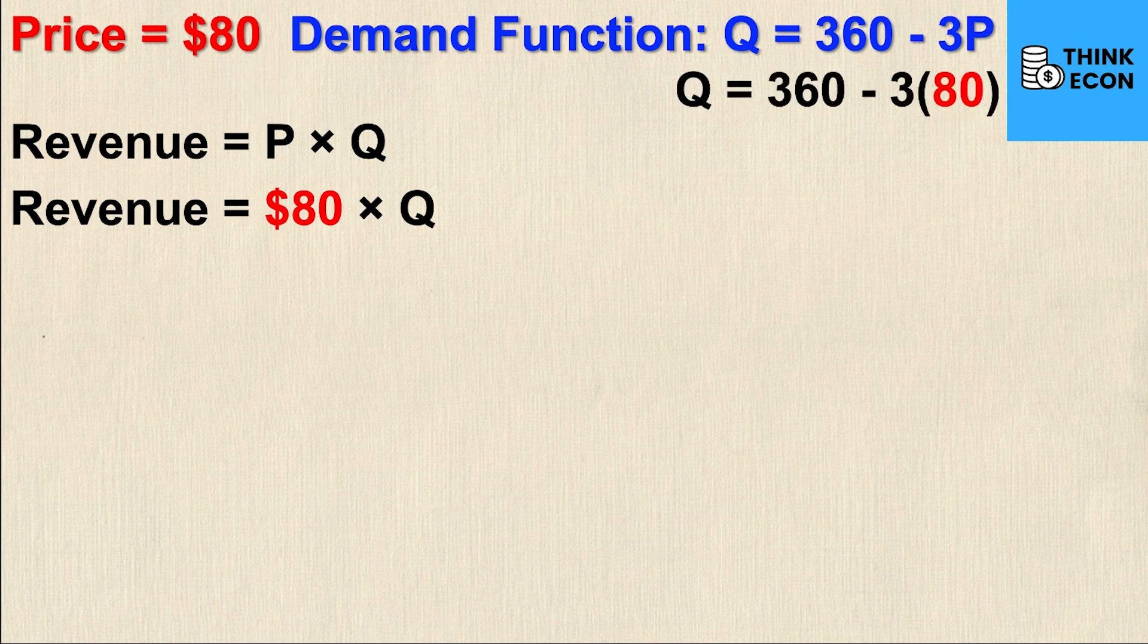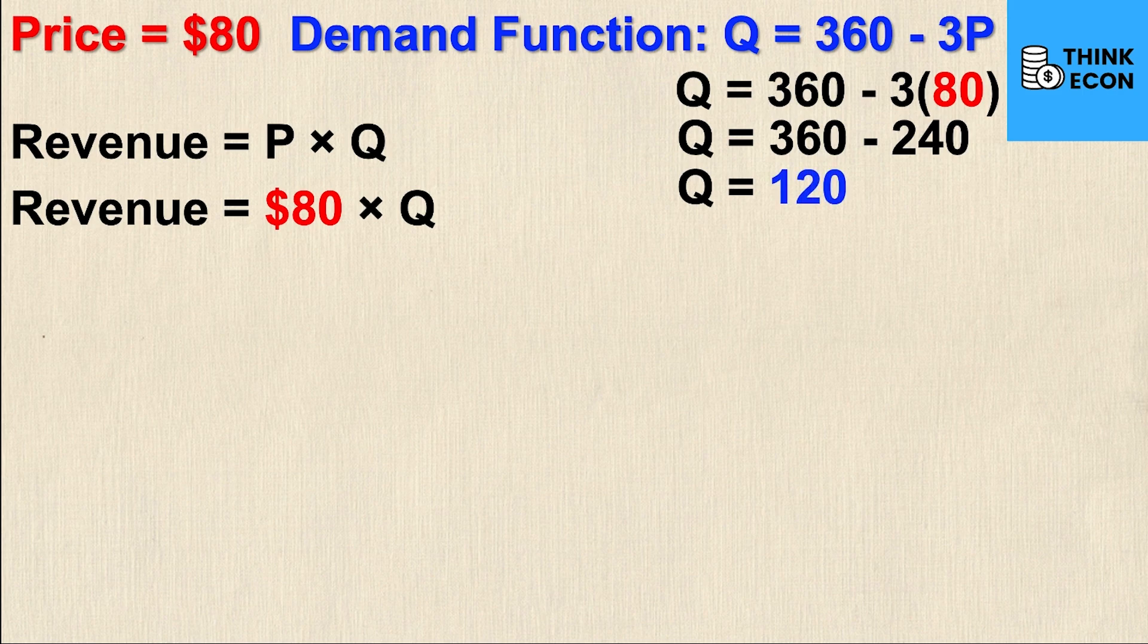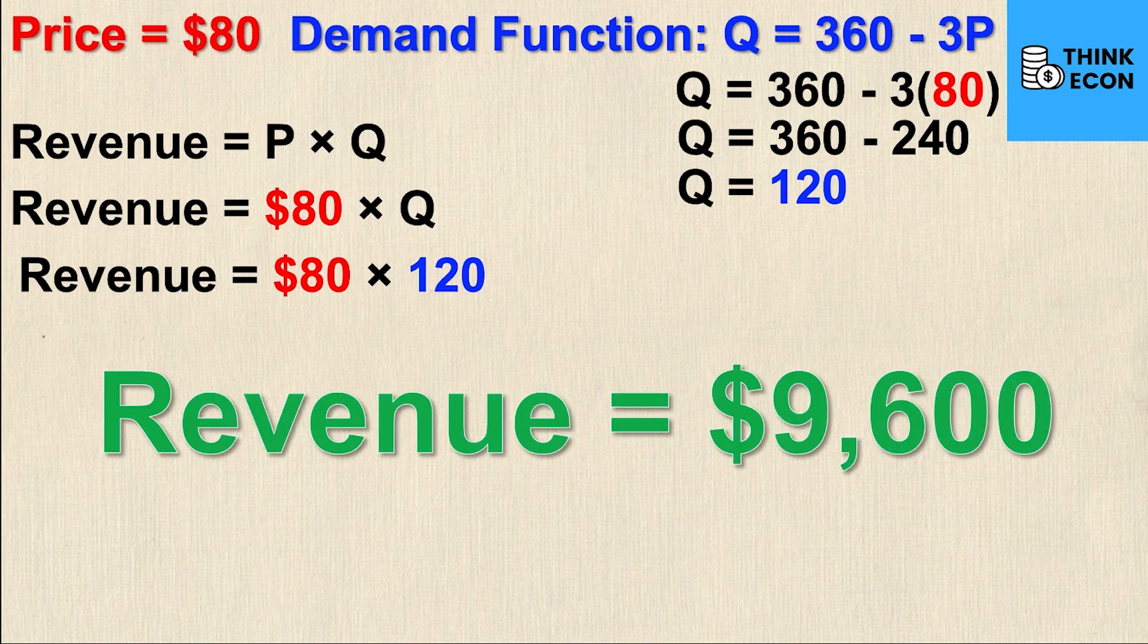Q is equal to 360 minus 3 times 80. Q is equal to 360 minus 240 and then finally my new quantity demanded value is 120. If I substitute this into the revenue equation I get revenue is equal to $80 times 120 units and that gives me a revenue of $9,600.